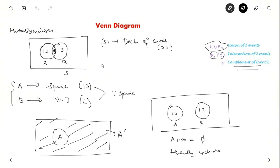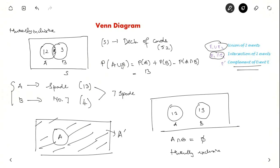Mathematically we can say that P(A union B) equals P(A) plus P(B) minus P(A intersection B). Here P(A union B) — that is either A or B — equals P(A) which is 13, plus P(B) which is 4, minus P(A intersection B) which is 1, giving 16.